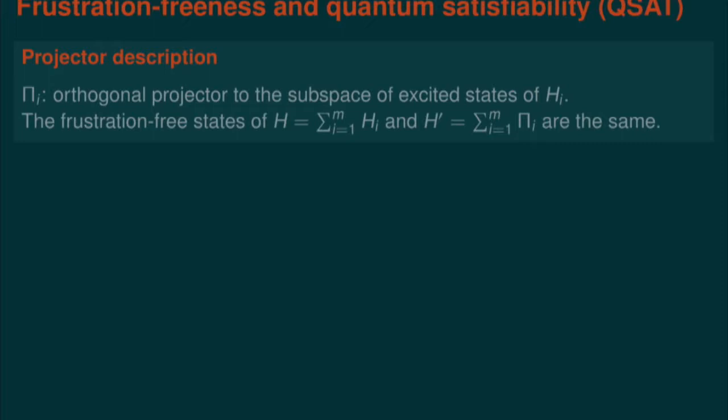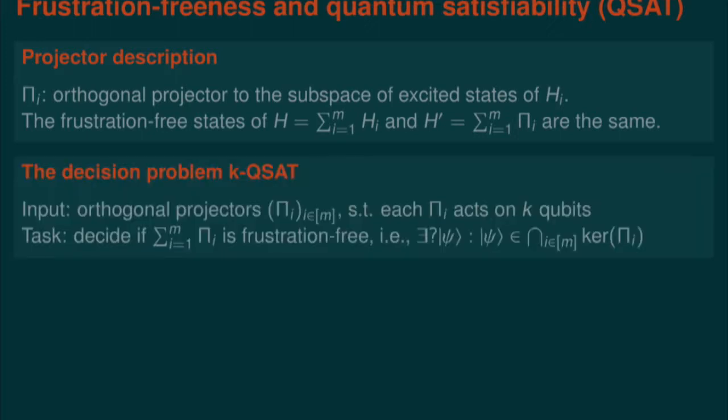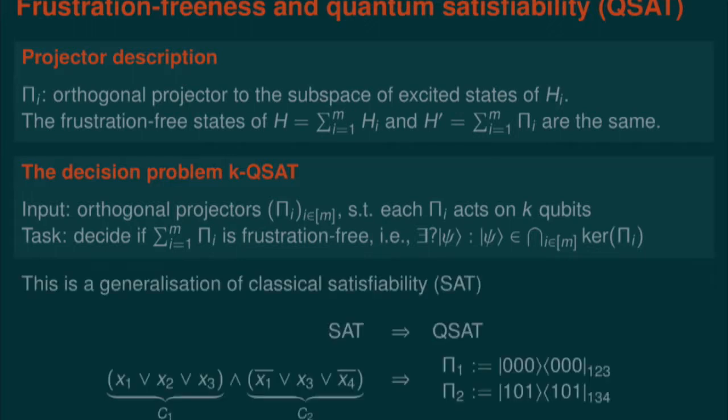How does one generalize this problem? It turns out that we can reduce our Hamiltonians to a simplified version, where we replace each local Hamiltonian term by a projector, which is a projector to the excited state. It turns out that this projector reduction carries over the frustration-free property, and the frustration-free states remain the same. If you consider this projector setting, then this leads to the k-QSAT problem, which is the following question: given a set of projectors which are all k-local, decide whether the arising Hamiltonian is frustration-free or not.